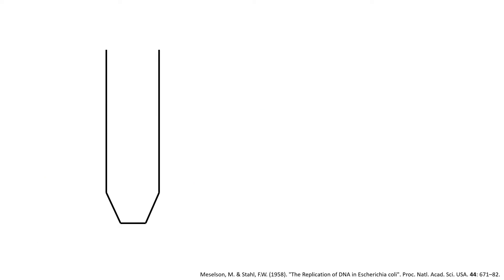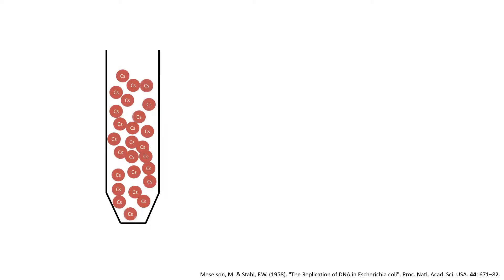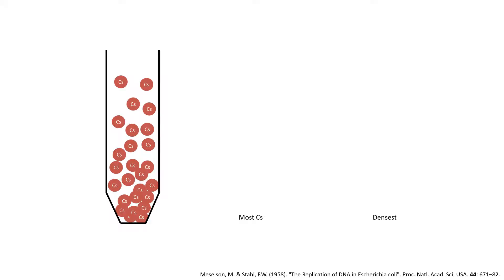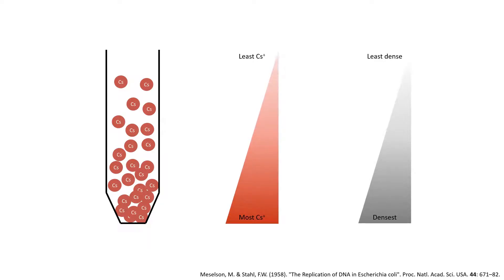The experiment used the principle of density gradient centrifugation. The centrifuge tube is filled with aqueous caesium salts. During centrifugation, the heavy caesium ions sink while diffusion causes the ions to rise, which creates varying concentrations of caesium ions through the column. The bottom of the tube has the highest concentration of caesium ions and is the densest, while the top of the tube has the lowest concentration and is the least dense. The varying concentrations therefore create a density gradient, and any component added for analysis would level off at a density equal to its own density.